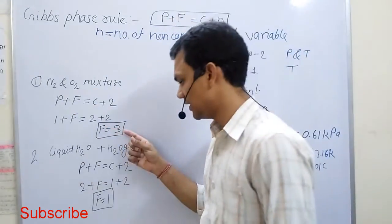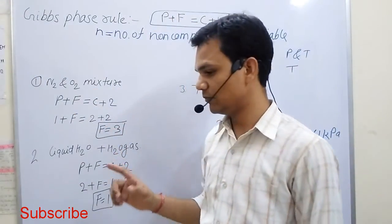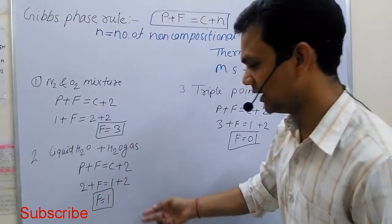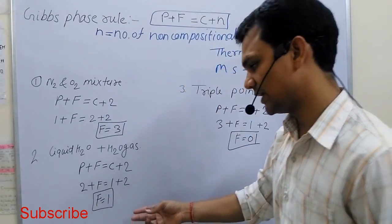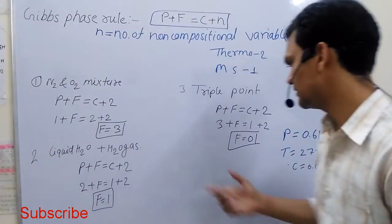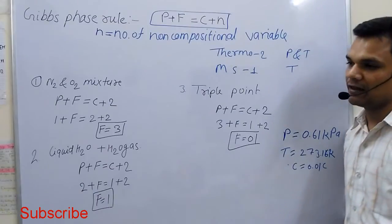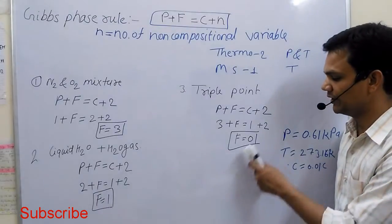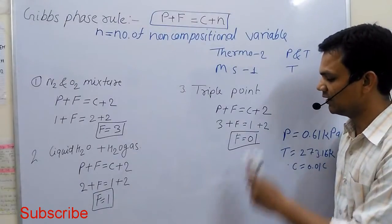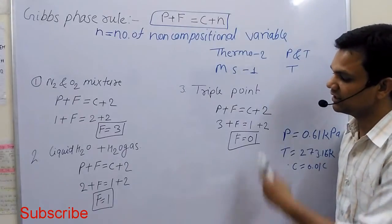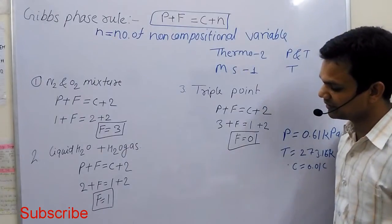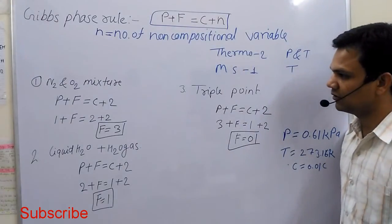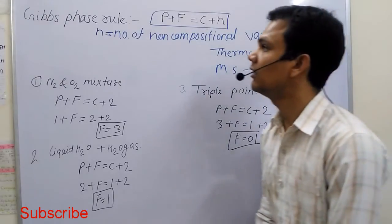Here we have 3 degrees of freedom for the N2/O2 mixture, and here we have 1 for the liquid-gas water system. We very well know that at atmospheric pressure, 100 degrees Celsius is the boiling point. At the triple point, we have no freedom to fix the state of the system because it is a standard temperature and standard pressure for water.